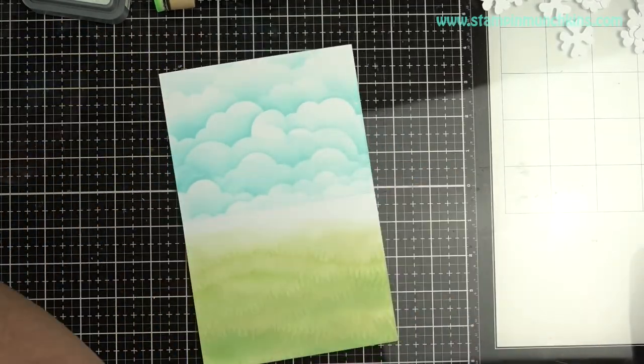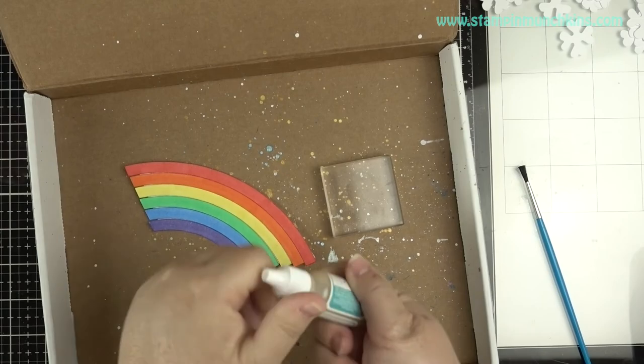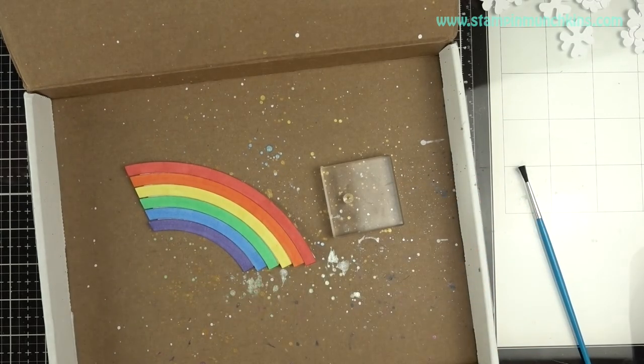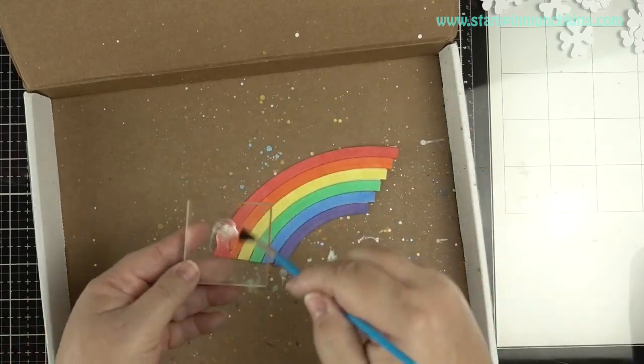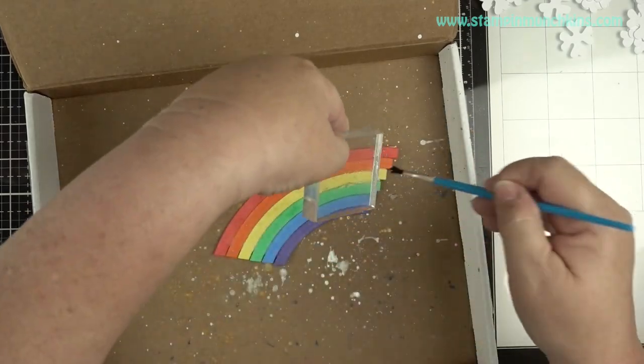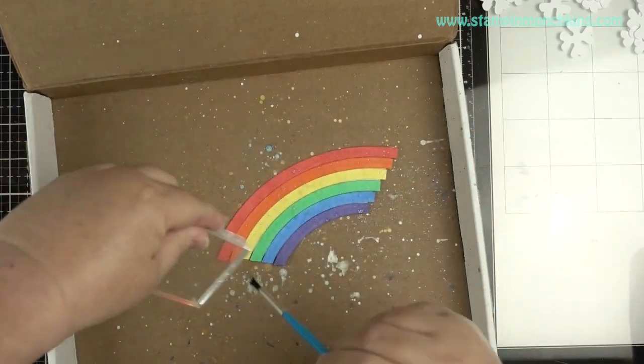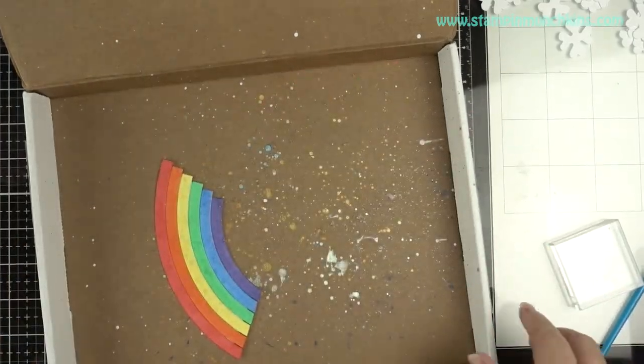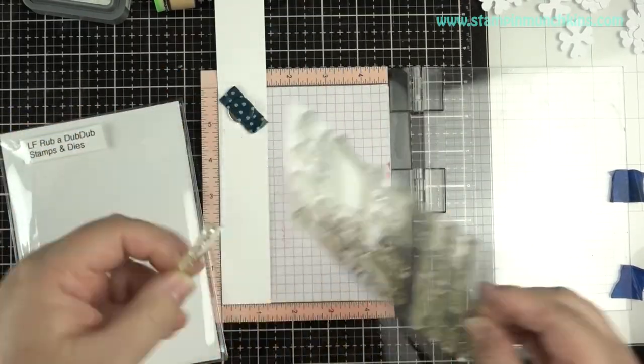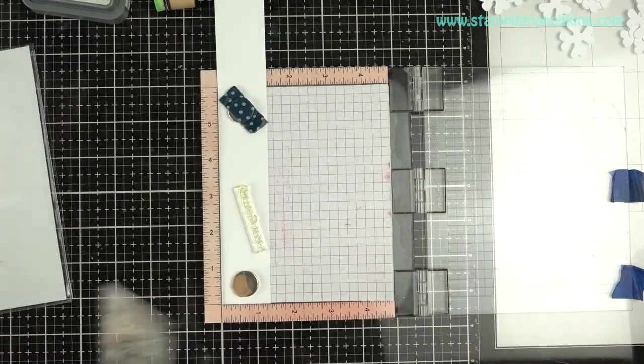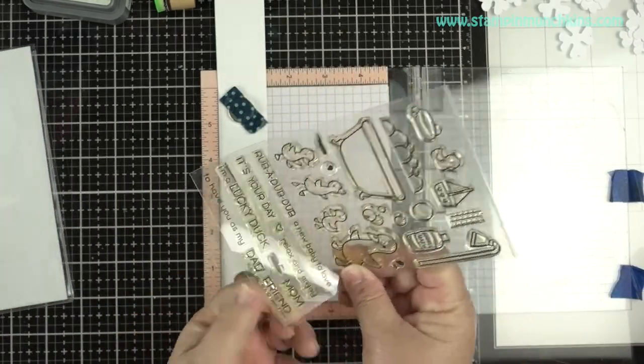I realized I need to do green on that middle pop-up portion too. Now I want some sparkle on my rainbow, so I'm using my Liquid Stardust - one drop and two drops of water onto my acrylic block, and I'm just splattering that on the rainbow.